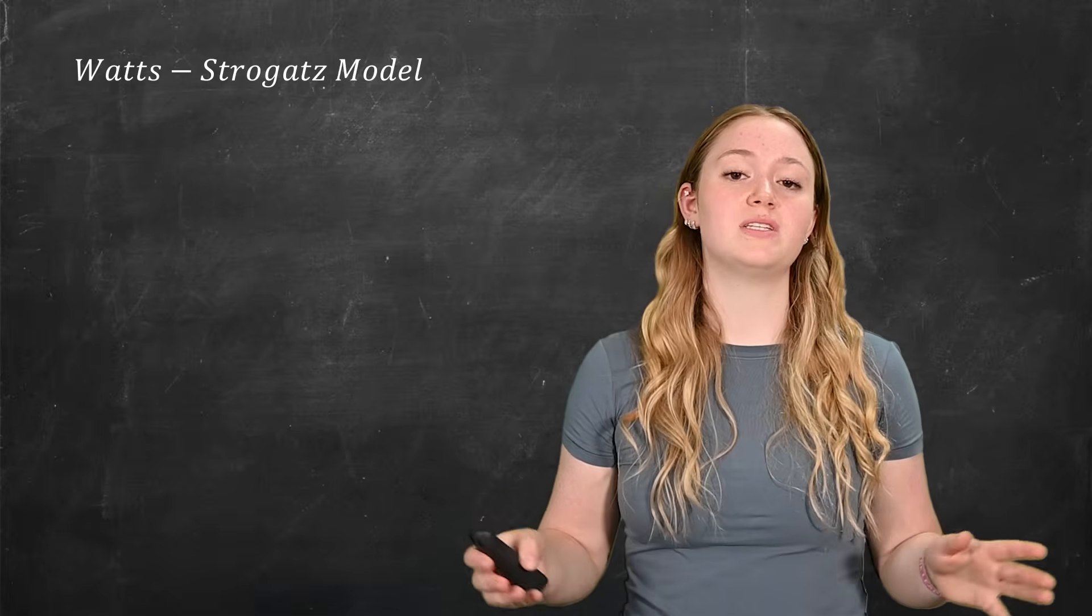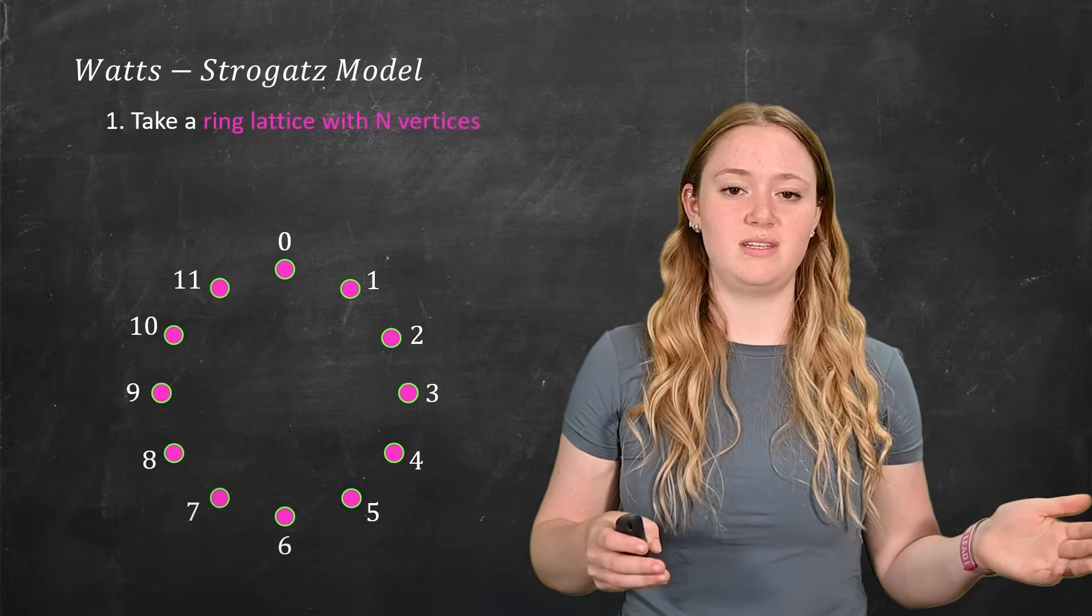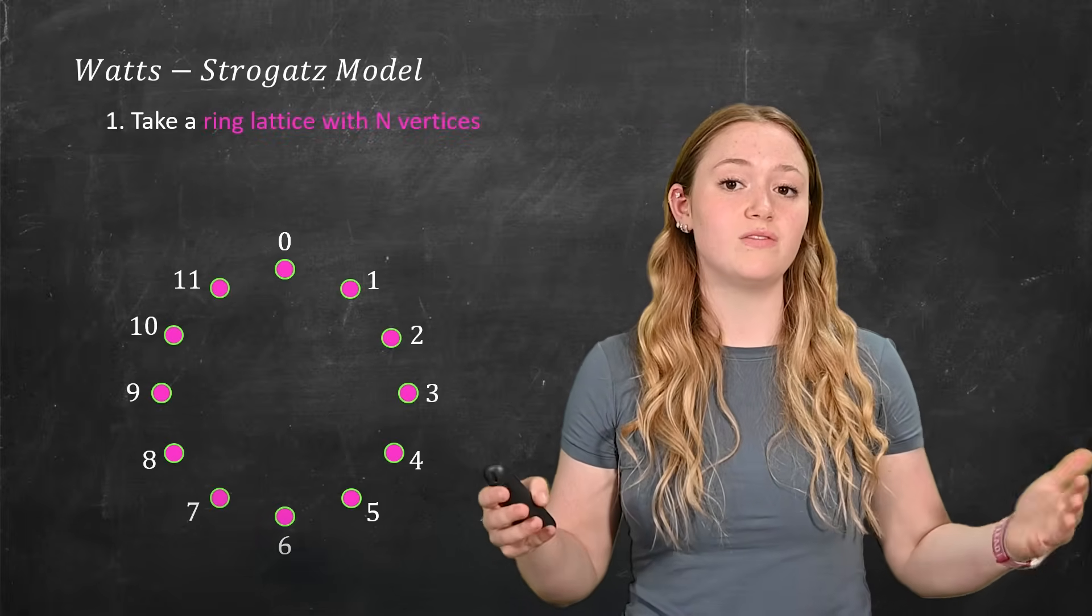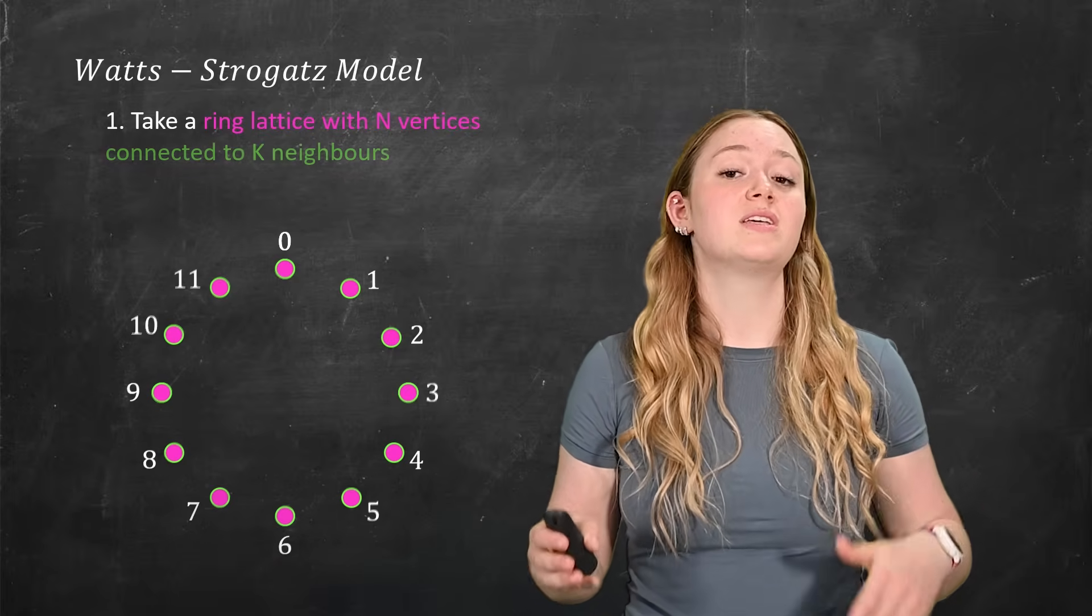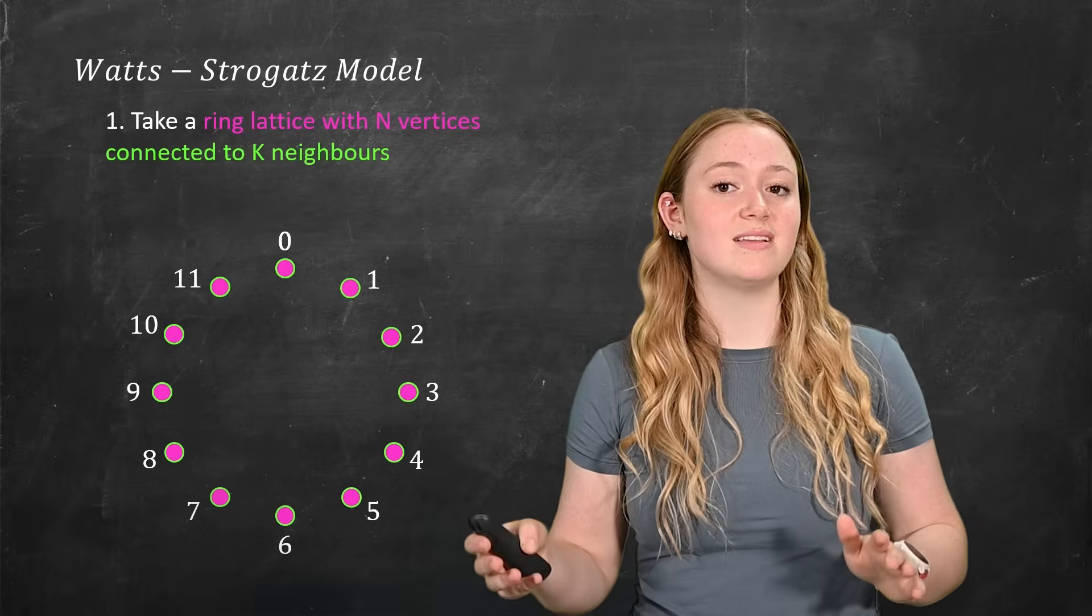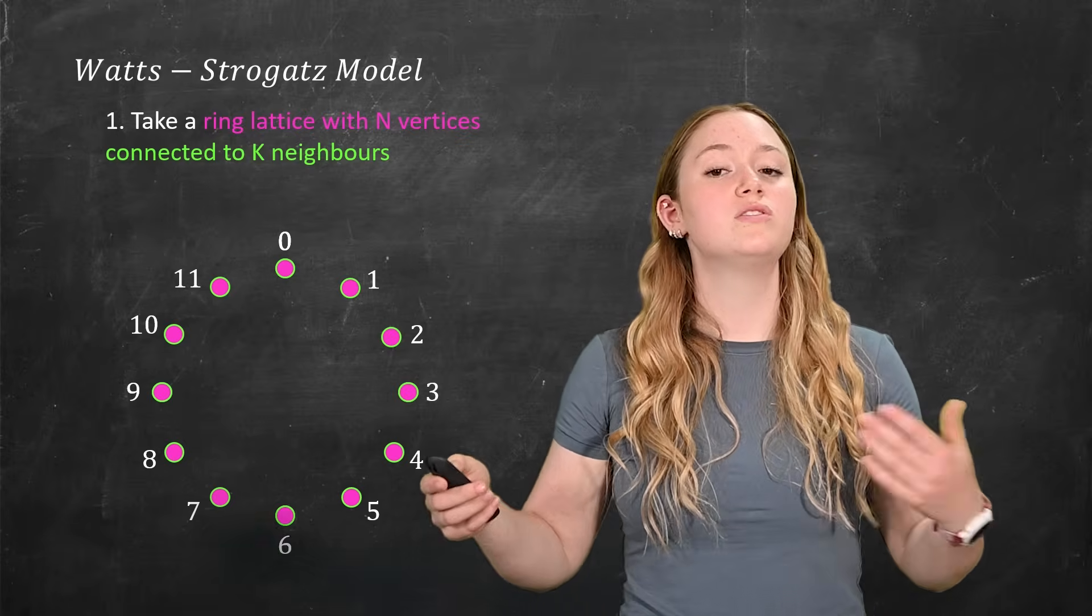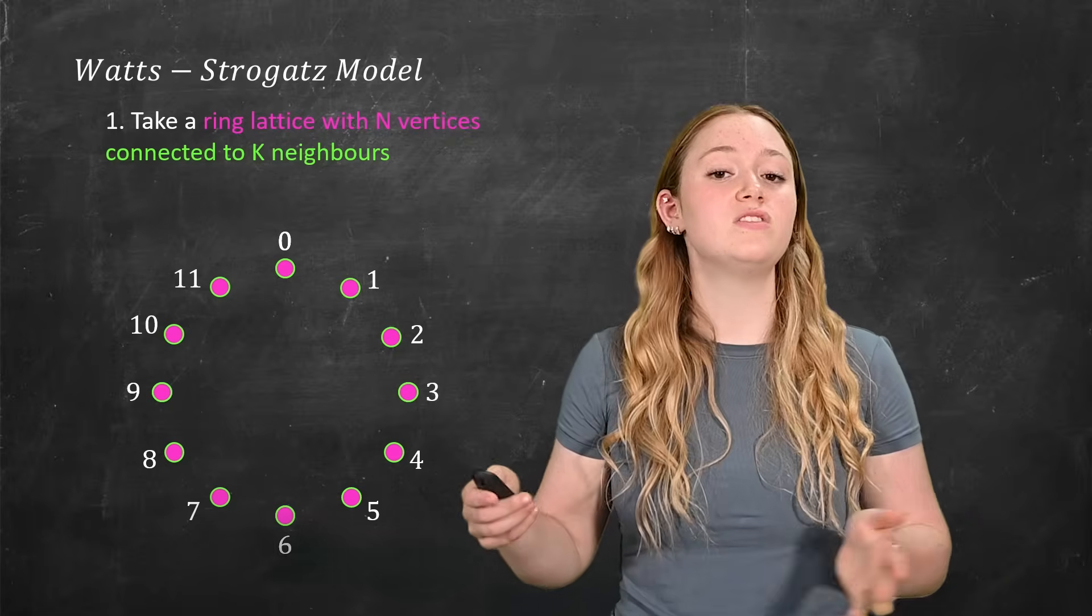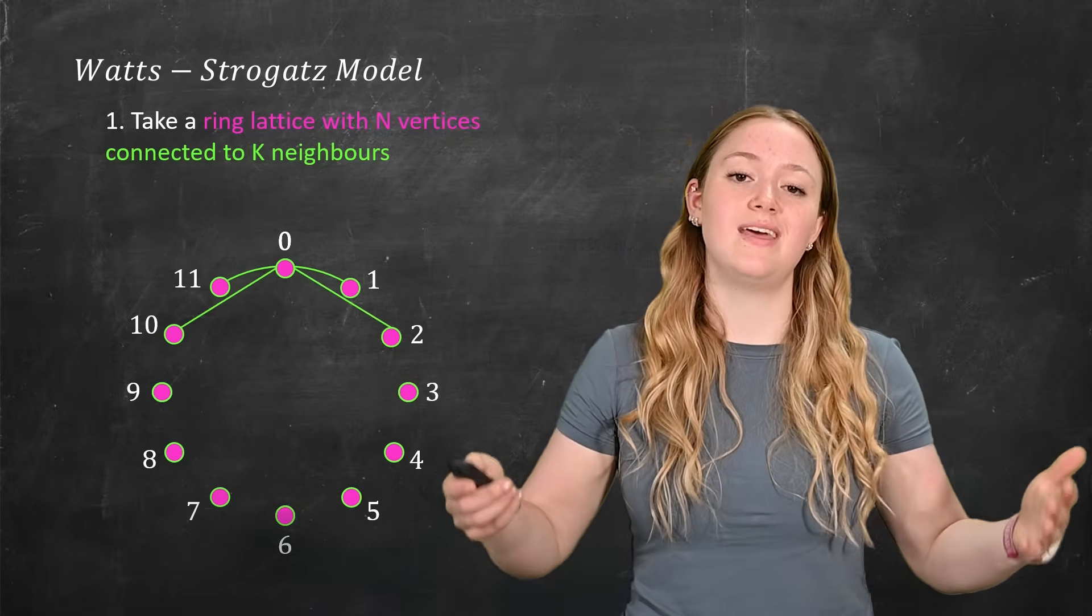So the first thing that we're going to do is we're going to take a ring lattice with n vertices. In this case, we're choosing 12. And we will connect each vertices to k neighbors, which in this case, k is equal to 4. So we'll do this, and we'll connect each vertex to 4 of its nearest neighbors, like this.